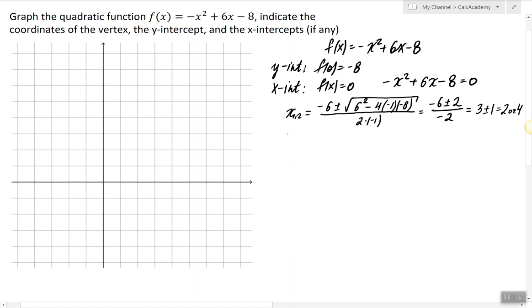To find the axis of symmetry now, we simply consider the expression used in the quadratic formula without a radical. So the axis of symmetry is a vertical line whose equation is x equals negative six divided by negative two, which is x equals 3.